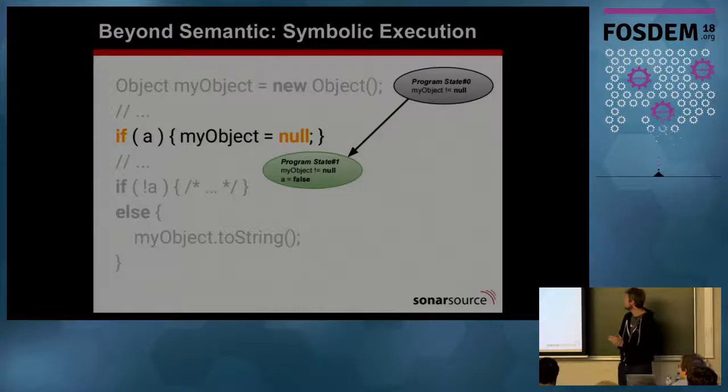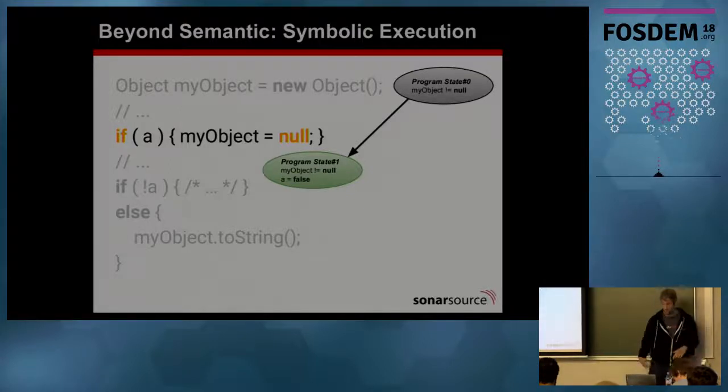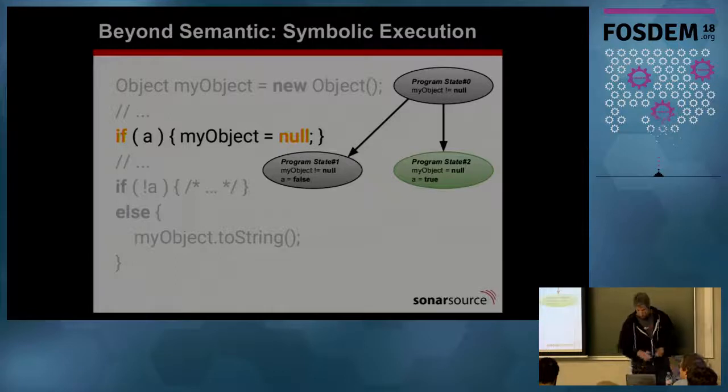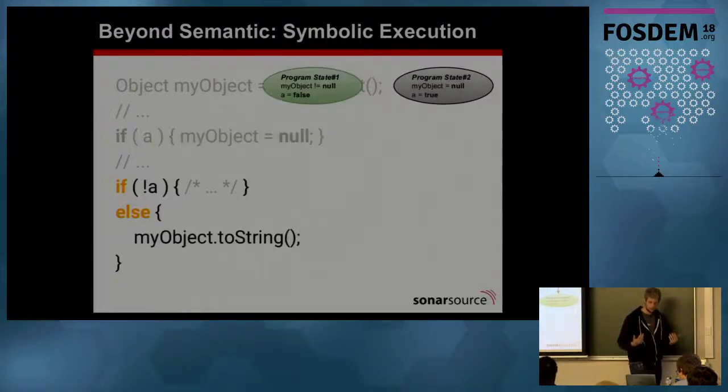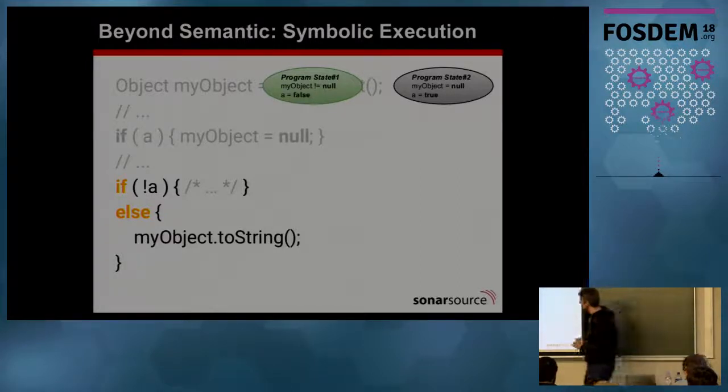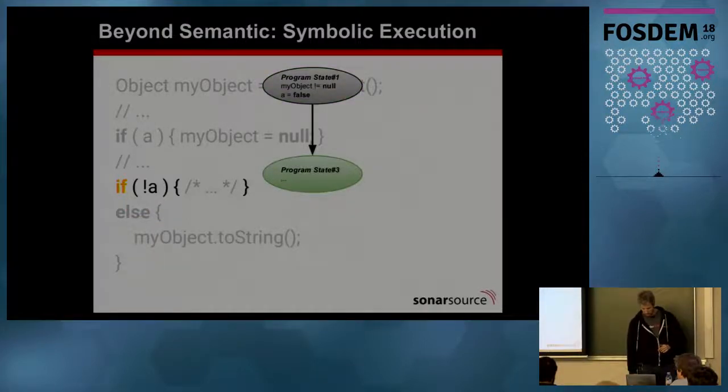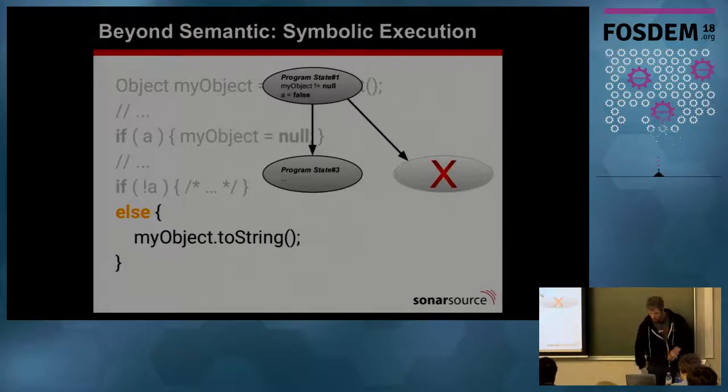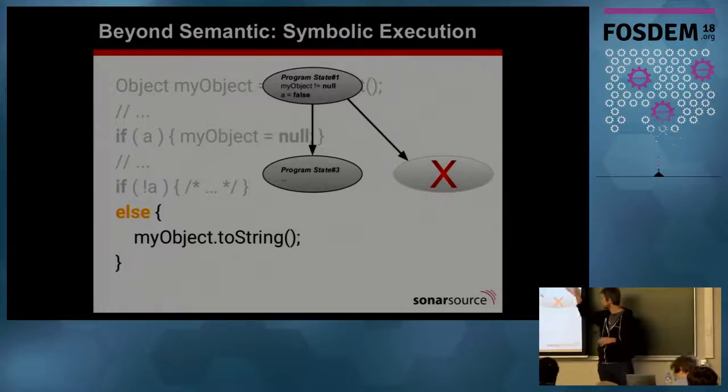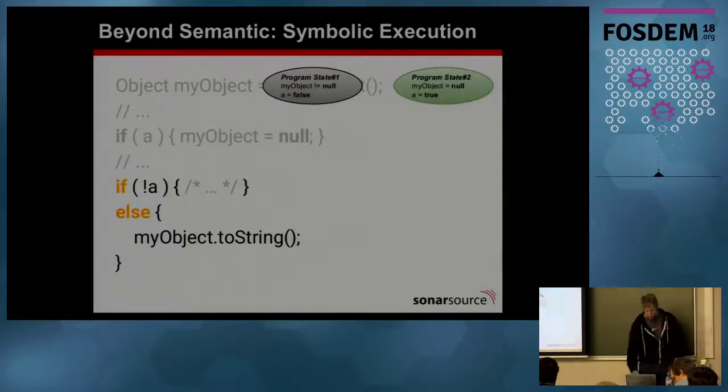When we reach a condition, we actually have two possible outcomes. We don't know about the condition A. So either A is false and my object is still not null as we started. Or A is true, and then my object is null. So we now have two possible states of the program. And so we continue the exploration. We reach the second condition, not A. We start with the first state and say, okay, A is false. So there is one state that is possible, the true. We can actually go into that condition. It's not really interesting. Let's move on. And the second part, we can't reach it. A is false. That's not possible. Nothing interesting, no more to see here.